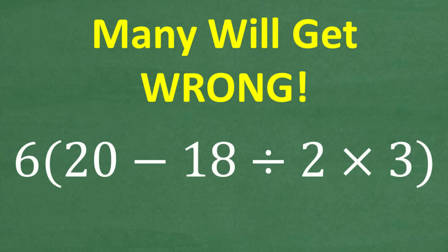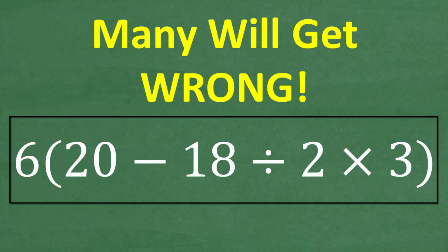A lot of people are going to be surprised that they're not going to get the right answer to this basic math problem. That's because a lot of people think they understand basic math better than they actually do. But let's see how you do with this problem. The problem is six times parentheses 20 minus 18 divided by two times three in parentheses. What is the answer?